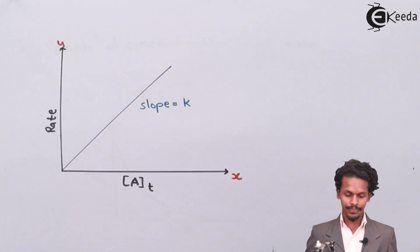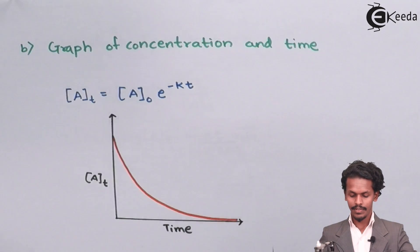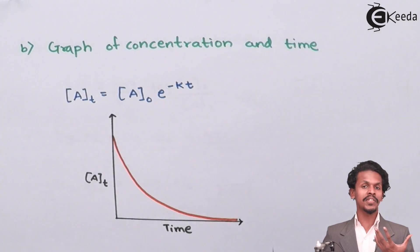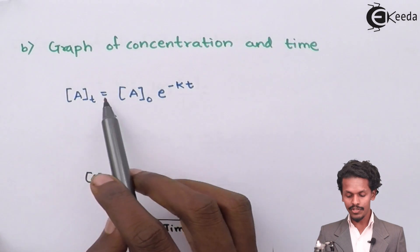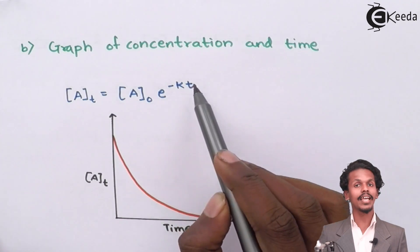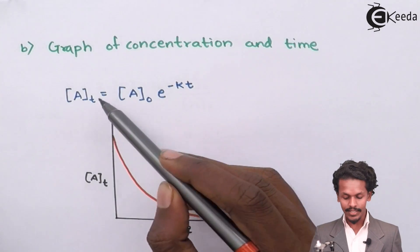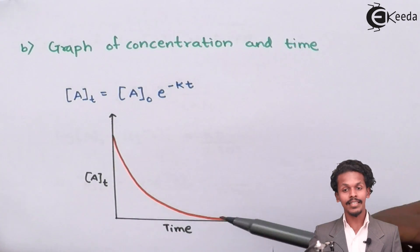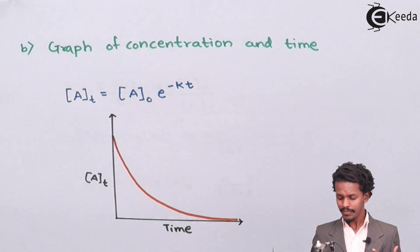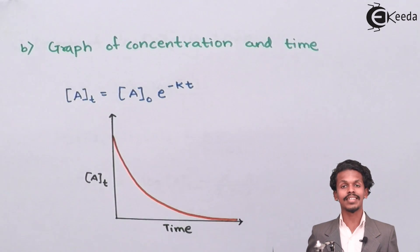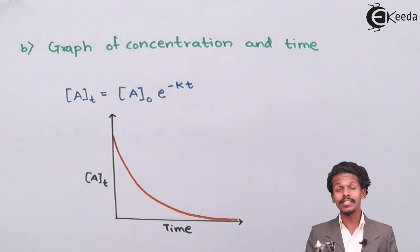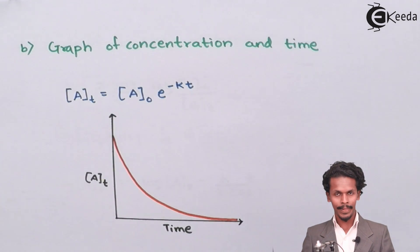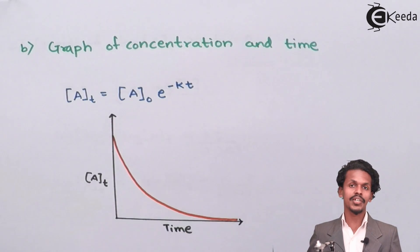The second graph is concentration versus time. If we draw this graph, we get the equation [A_T] = [A₀] × e^(−kt). Here [A_T] is on the y-axis and time is on the x-axis. The graph is exponential — as time increases, [A_T] decreases, meaning the amount of unreacted reactant decreases as the reaction proceeds forward.